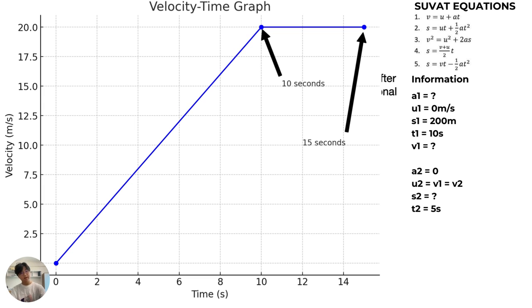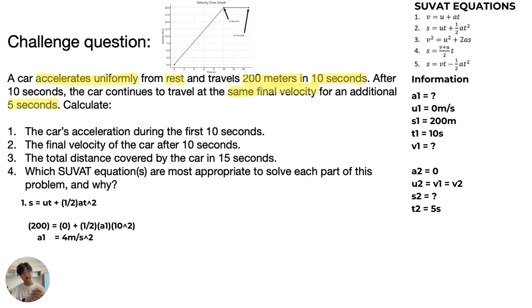Now we can see that from 0 seconds to 10 seconds, the velocity is constantly rising - that is the constant acceleration. And from the 10th second to the 15th second, it is a straight line, which means there is no acceleration and the velocity is the same. We'll just leave the graph up there for us to look at when we do the question.